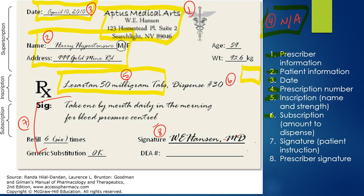Number six is the subscription, or it's the amount that needs to be dispensed. This is the number of tablets that you need to give the patient. Usually it's in the form of 30, which in most cases prescriptions are for 30 days. If it's for 30 days and you have two tablets that you need to give the patient, then it's going to be 60 that need to be dispensed.